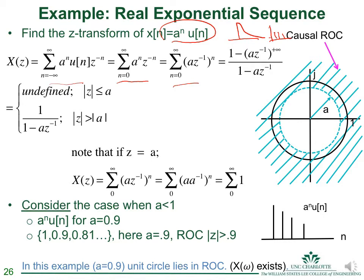Using the geometric series formula with α = az^(-1) = a/z, the sum converges when |a/z| < 1, i.e., |z| > |a|. Under that condition, the result is 1/(1 - az^(-1)), and the region of convergence is |z| > |a|.